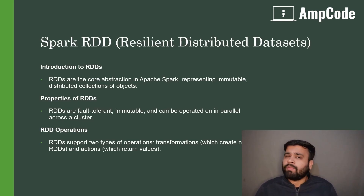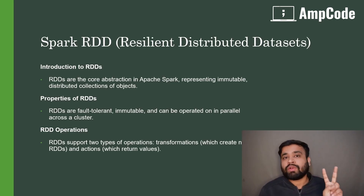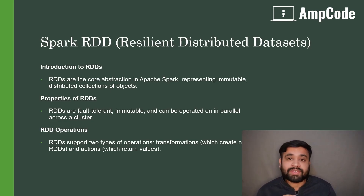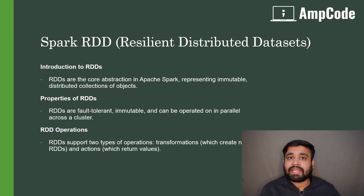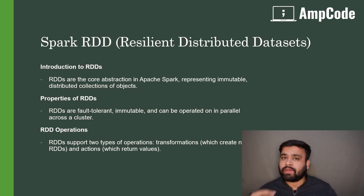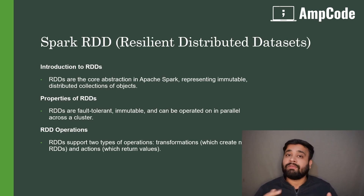There are different operations we can do on top of an RDD, and they fall into two parts. The first operation is transformation, which means we are transforming the data into a required format. We have map, filter, and flatMap — there are different transformations present in RDD.